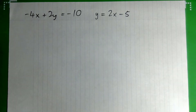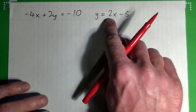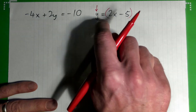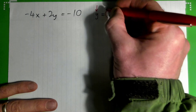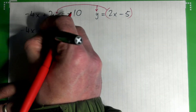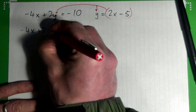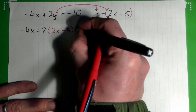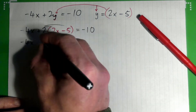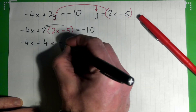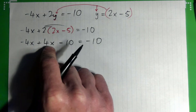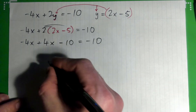This is a good example of solving by substitution. We want to plug in the expression for y into the other equation because that variable is already isolated. So we get negative 4x plus 2 times (2x minus 5) equals negative 10. Distributing gives us negative 4x plus 4x minus 10 equals negative 10. Now we add like terms — what is negative 4x plus 4x?